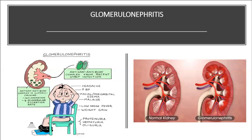In glomerulonephritis, you may also see oliguria with fixed specific gravity. When a client is oliguric and the specific gravity remains fixed — for example, remaining at 1.010 even as fluids are given — this indicates impending renal failure.